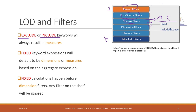Next, Tableau will use the dimension filters. After that, it will use INCLUDE and EXCLUDE, and then the measure filters will be taken into place. And lastly, there will be the Tableau calculated filters.